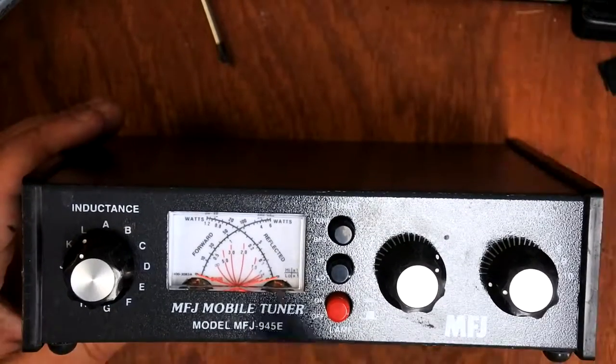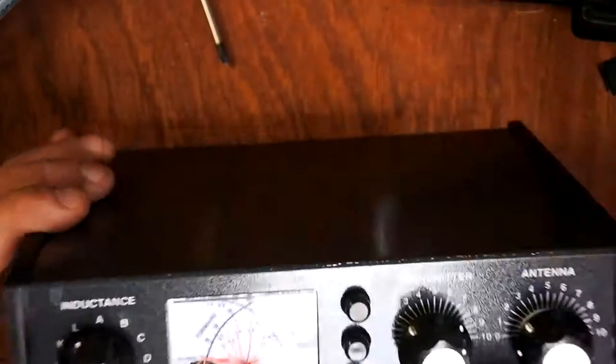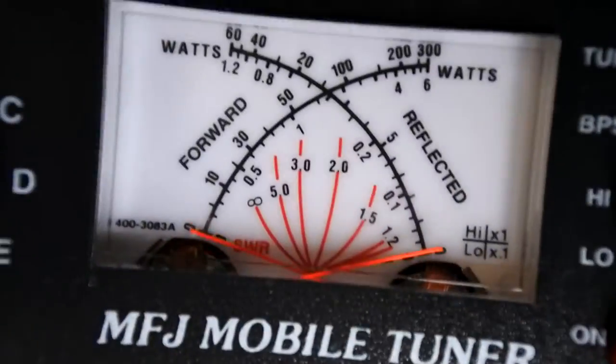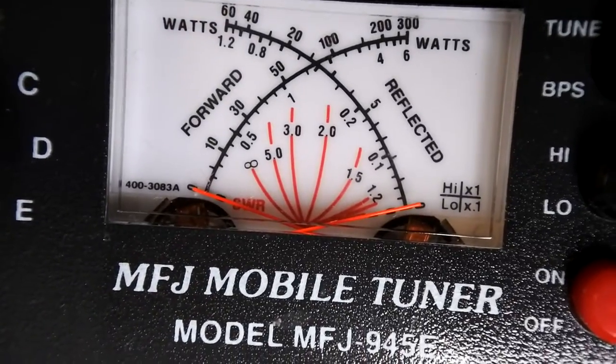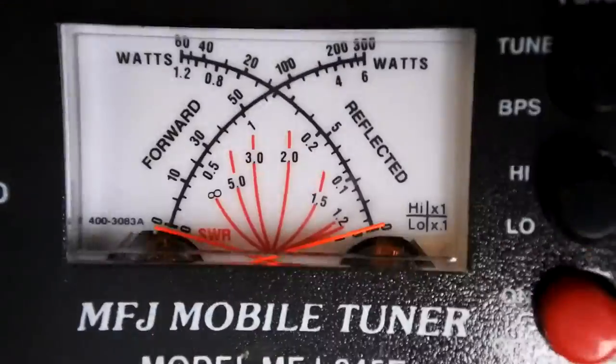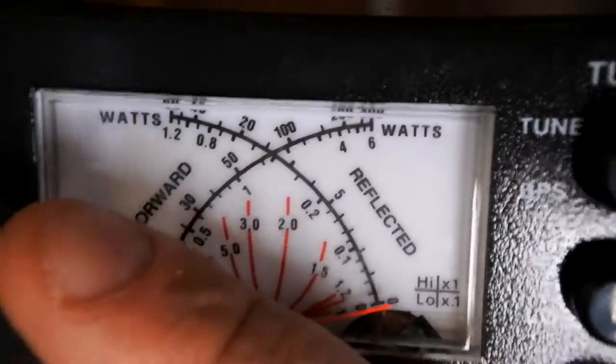And this is an SWR meter that's built in, and this tells you the ratios of what's coming through. And if I, as you can see, there's the forward and reflected, so the forward signal is what you're pumping out, the reflected is what's coming back. And there's two needles, and where those needles meet, you get the ratio here. And ideally, you want them to meet